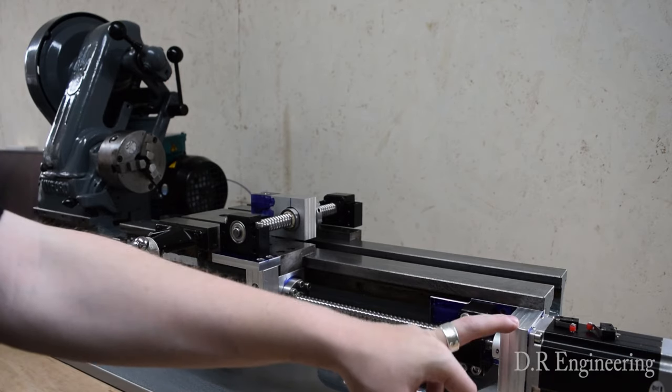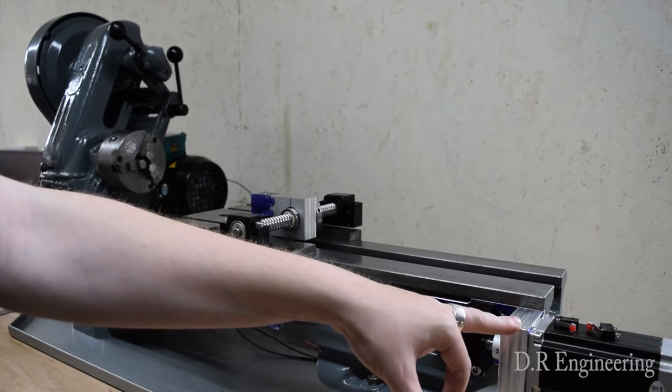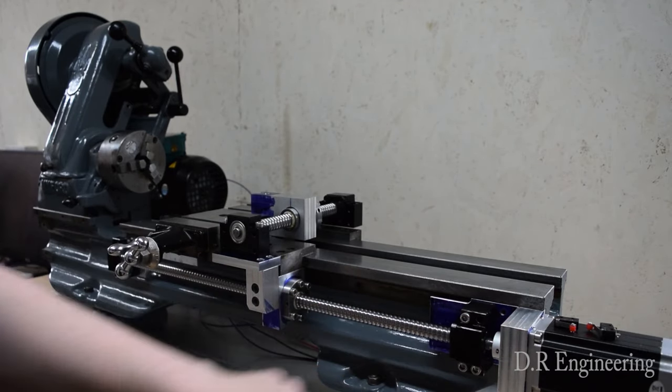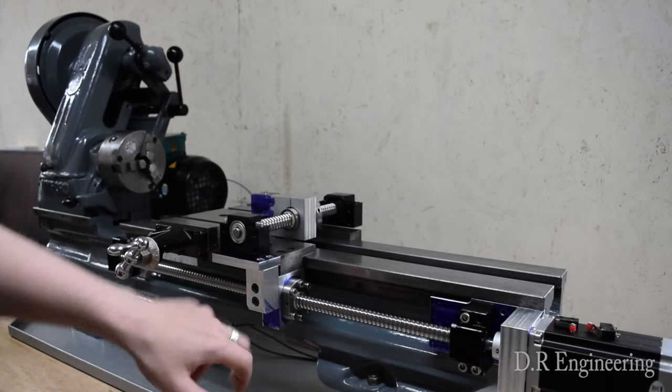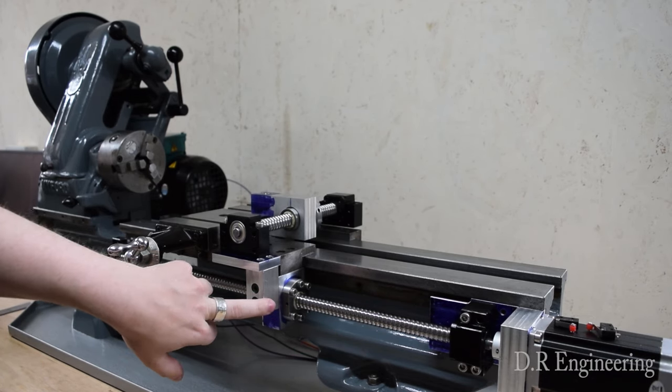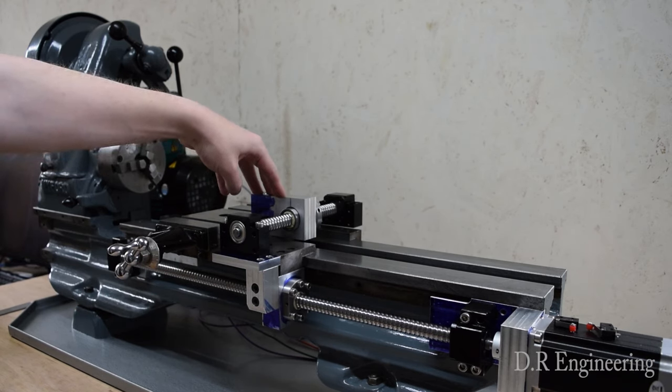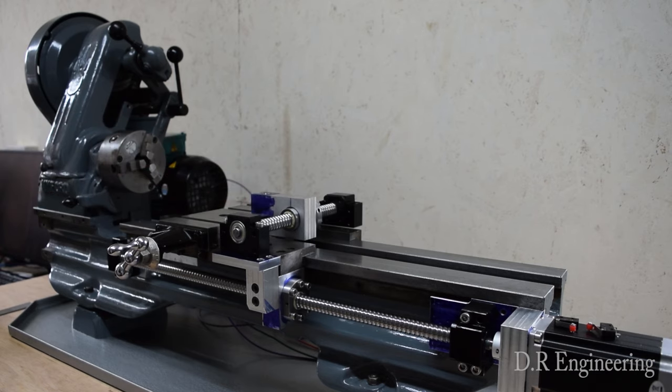But I managed to get the main Z-axis stepper bracket, or the mount rather, and the main nut down here. Then I also had a small piece I've used for the X-axis which I'll show in more detail in a moment, and the nut mount for the X as well, which again I'll zoom in and explain what I'm doing up there.